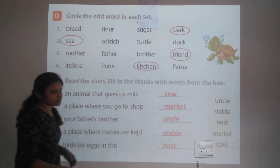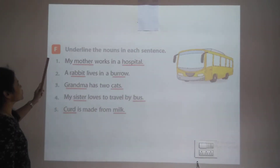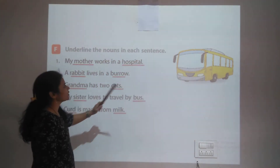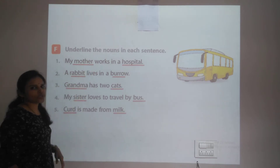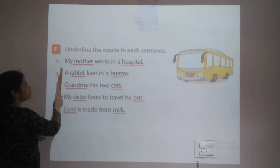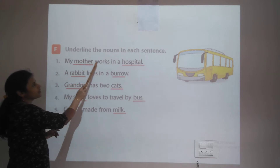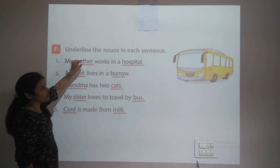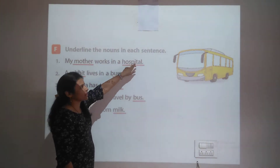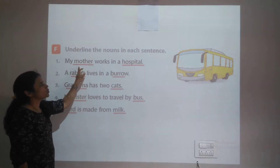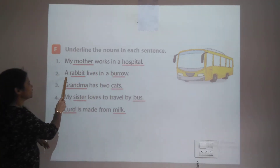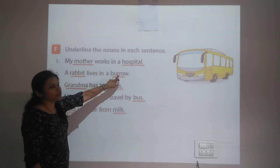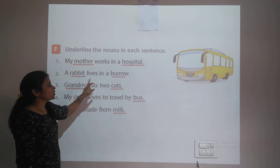Question F: Underline the noun in each sentence. First sentence: My mother works in a hospital. The nouns are 'mother' and 'hospital' — underline both. Second sentence: A rabbit lives in a burrow. 'Rabbit' and 'burrow' are both nouns — underline both.